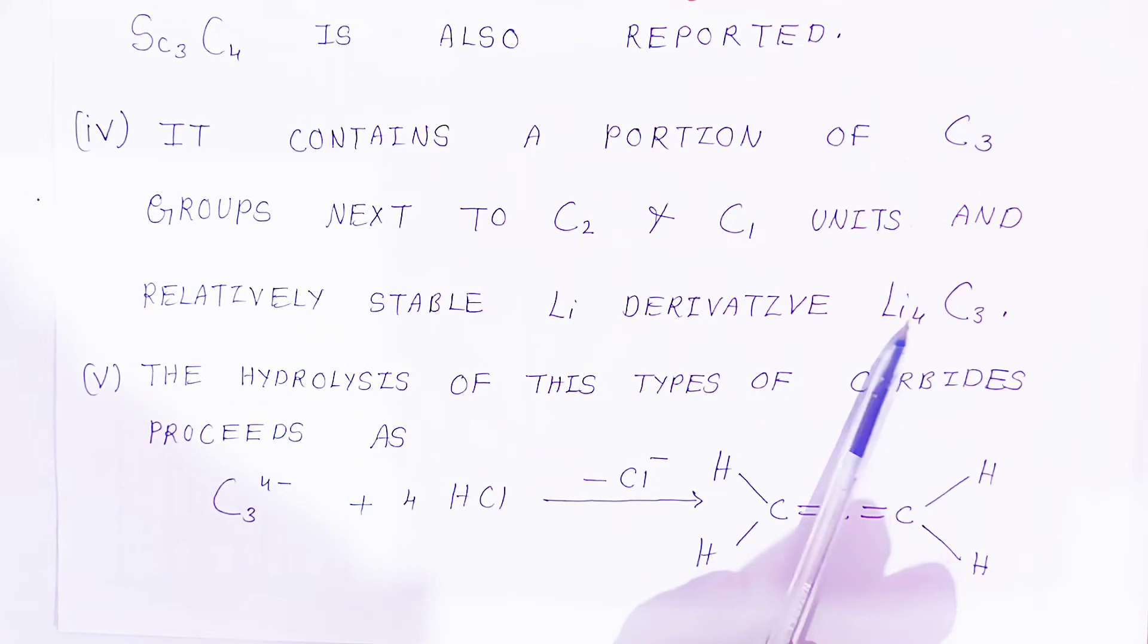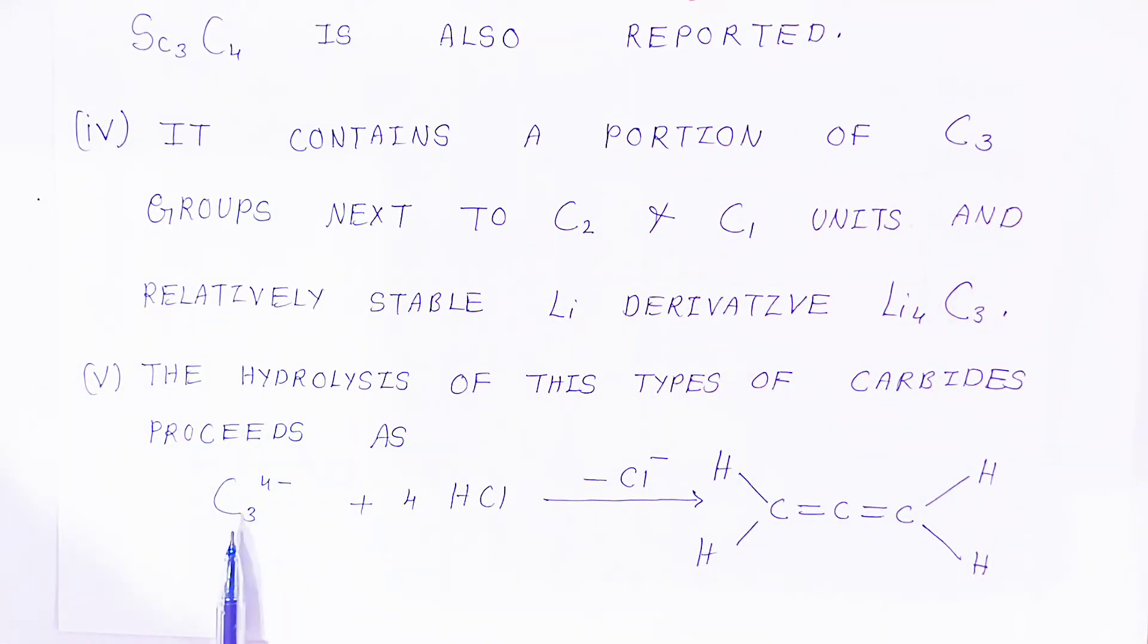For example Li4C3. The hydrolysis of this type of carbides proceeds as: when C3- reacts with 4HCl it eliminates chloride and forms this type of compound, allene. Understanding students?